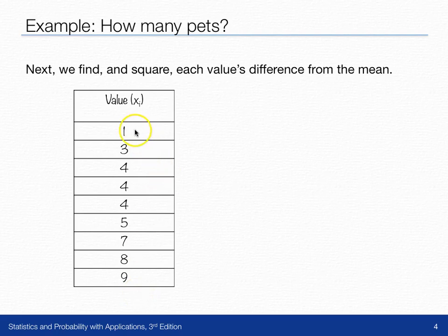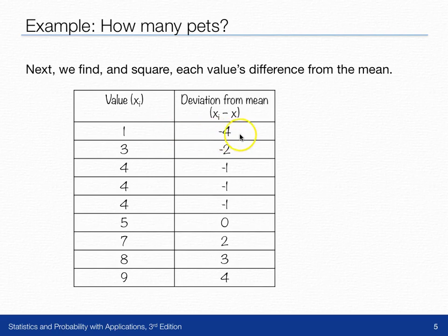So the value of one is four away from the mean. It's four below the mean, so the difference between one and five is negative four. We're going to do that with all of the values and obtain this.